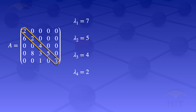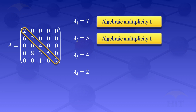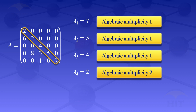In this case, 7 is appearing once, so the algebraic multiplicity of 7 is 1. The 5 is appearing once, so the algebraic multiplicity of 5 is 1. The 4 is appearing once, so the algebraic multiplicity is 1. Now when you look at the 2, it is appearing 2 times — it's a root of the characteristic polynomial 2 times, meaning it is an eigenvalue 2 times. Therefore, the algebraic multiplicity of lambda 4 is 2.